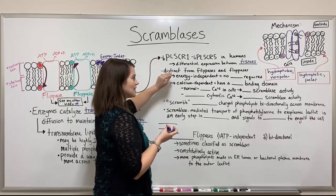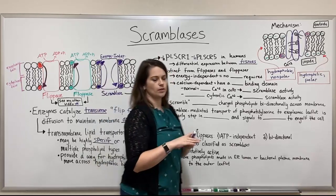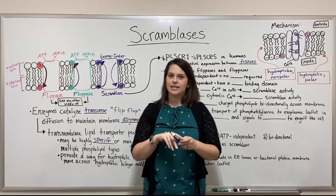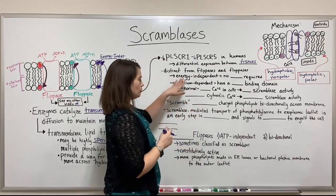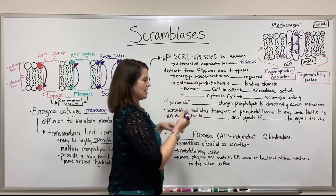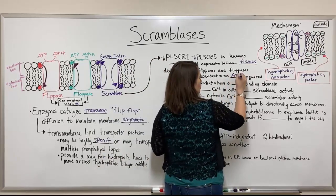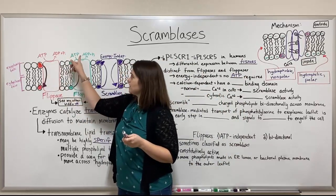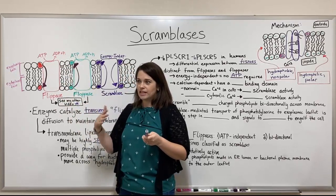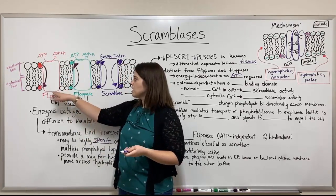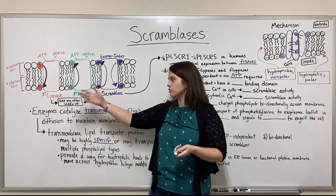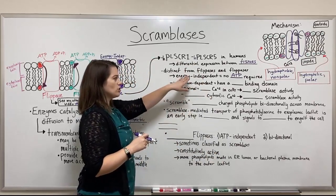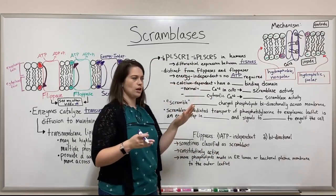Scramblases are distinct from flip-ases and flop-ases in several ways. First of all, they are energy independent — they do not require ATP. Flip-ases and flop-ases use ATP hydrolysis as an energy investment from the cell to drive their action. Scramblases, on the other hand, are energy independent with no ATP hydrolysis required.